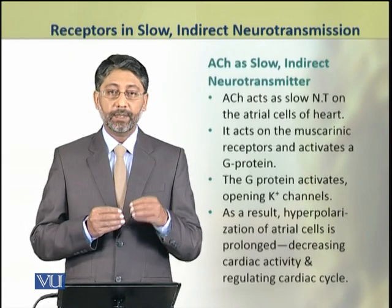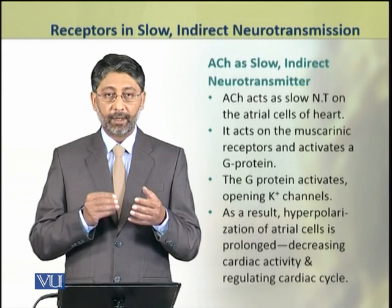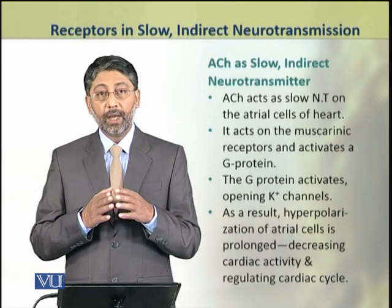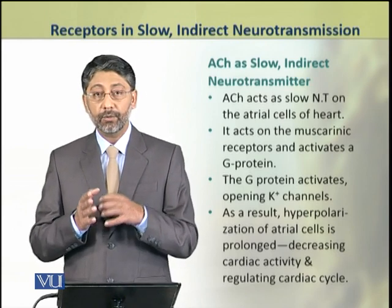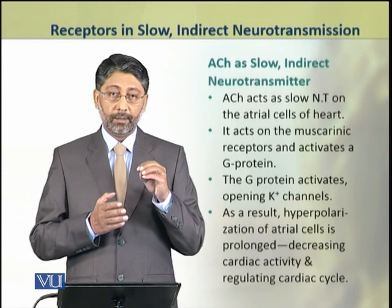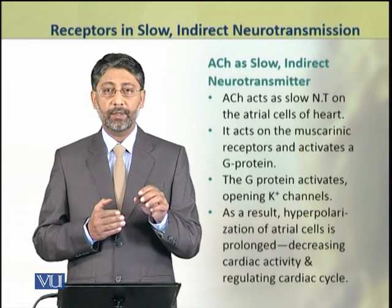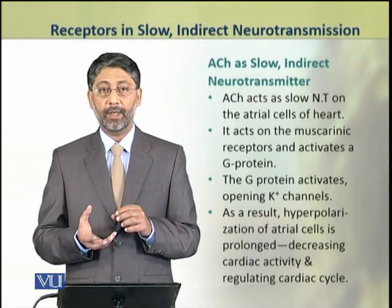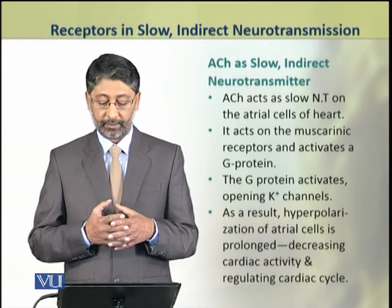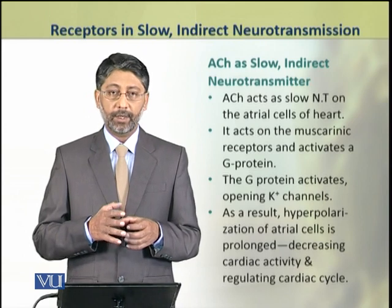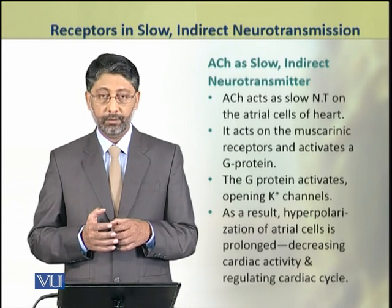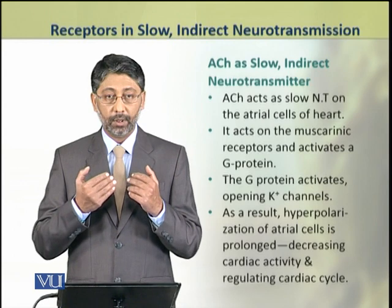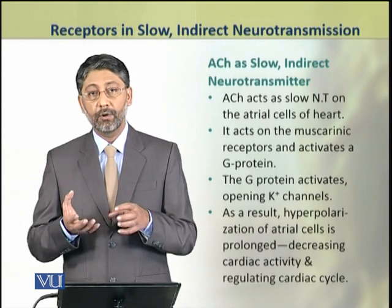We shall take an example of acetylcholine acting as a slow indirect transmitter. Acetylcholine acts as a slow neurotransmitter on the atrial cells of the heart — that is, the cells of the atrium — where muscarinic acetylcholine receptors are present. As a result, it activates a G protein, which in response results in the opening of potassium channels.